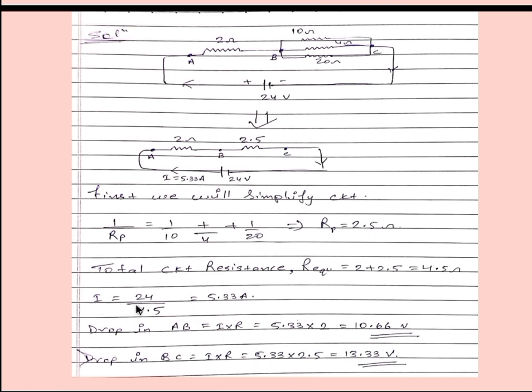Again total circuit resistance is equal to 2 plus 2.5 is equal to 4.5 ohm. Now we have total resistance and voltage. From here I is equal to V by R. From here we can get I which is 5.33 ampere. Now drop in AB is equal to I into R. So in AB, I will be 5.33 and resistance will be 2, so it will be 10.66 volt.